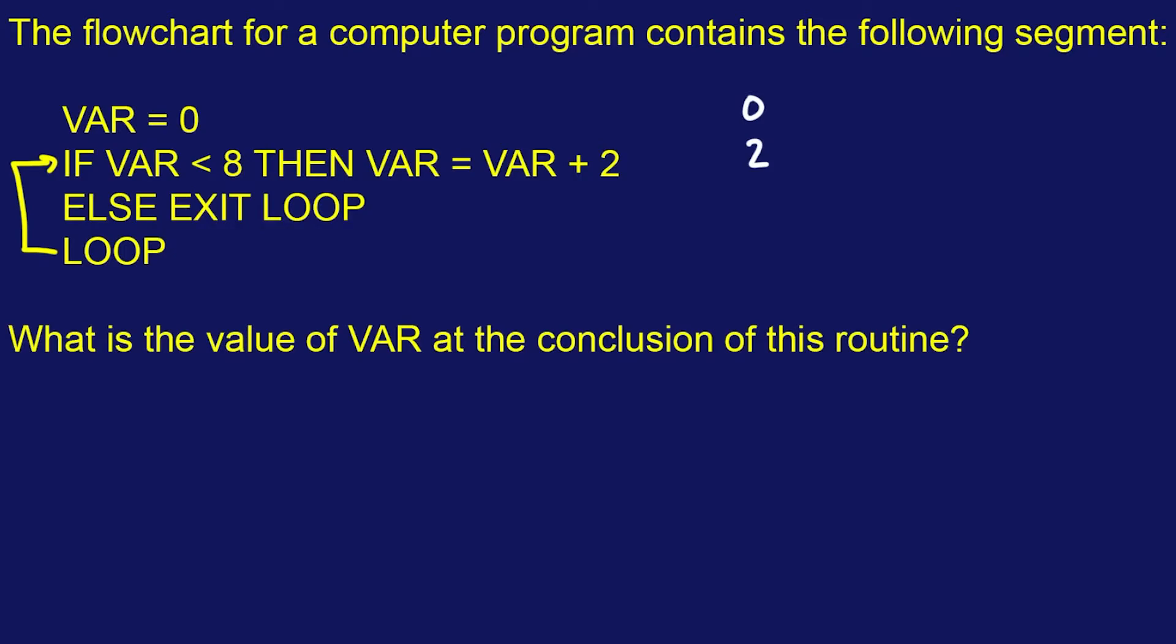And it says exit loop. We're going to exit the loop and go to the next line. Oh, it tells me to loop it again. So I'm going to go straight to the loop and say, is 2 less than 8? Well, I think so. So we're going to add 2 to it again. So we're going to do 4, exit loop, go do it again. It's less than 8. Of course it is. So it's going to go to 6. And then we're going to add 2 again because 6 is less than 8. So we're going to go to 8.